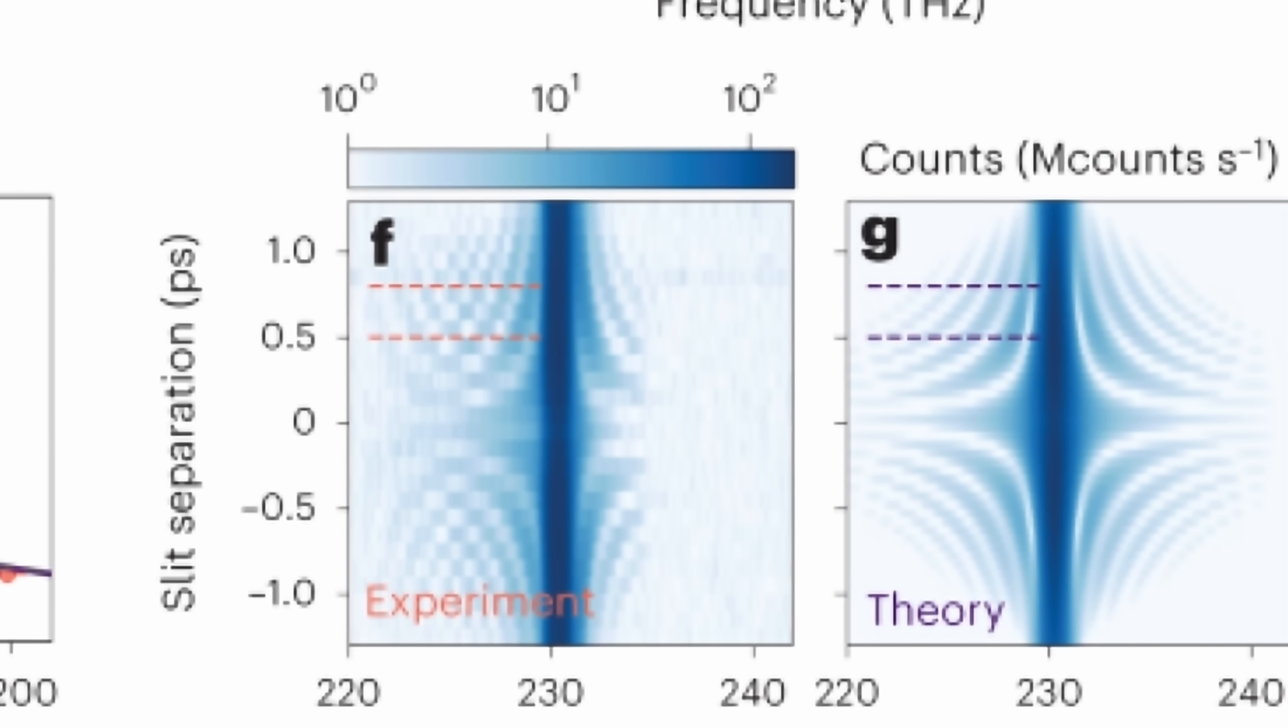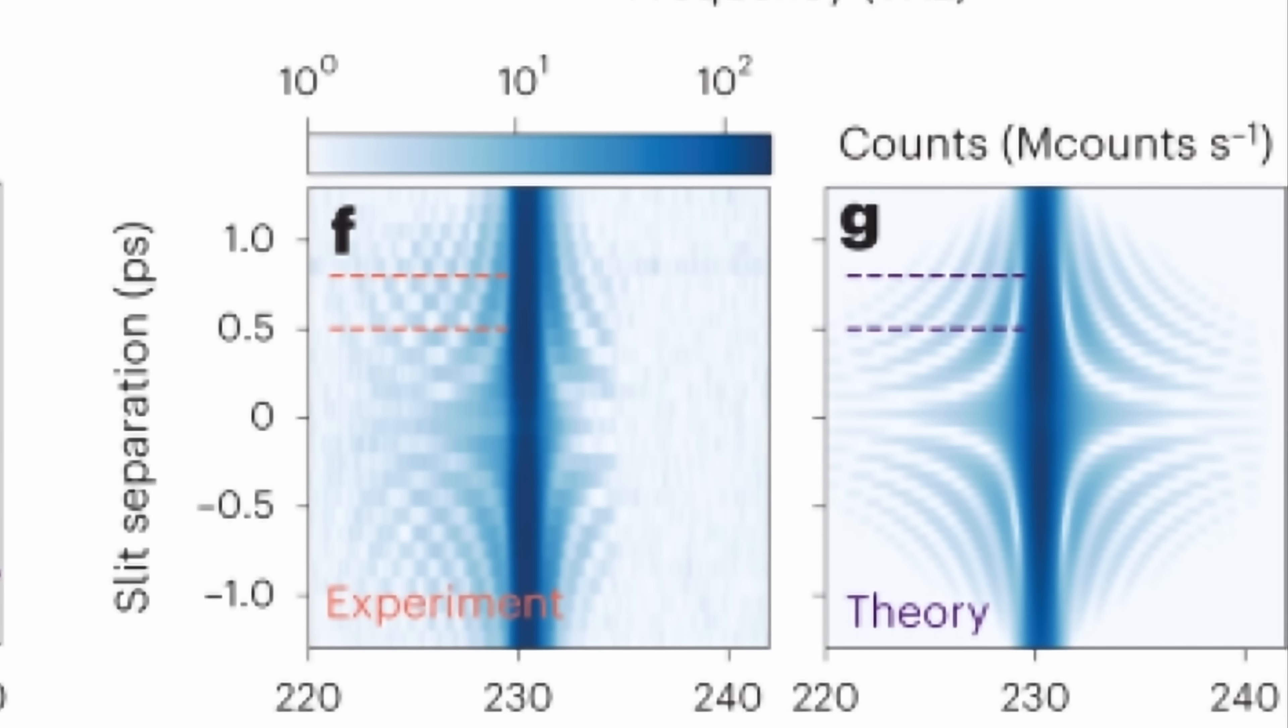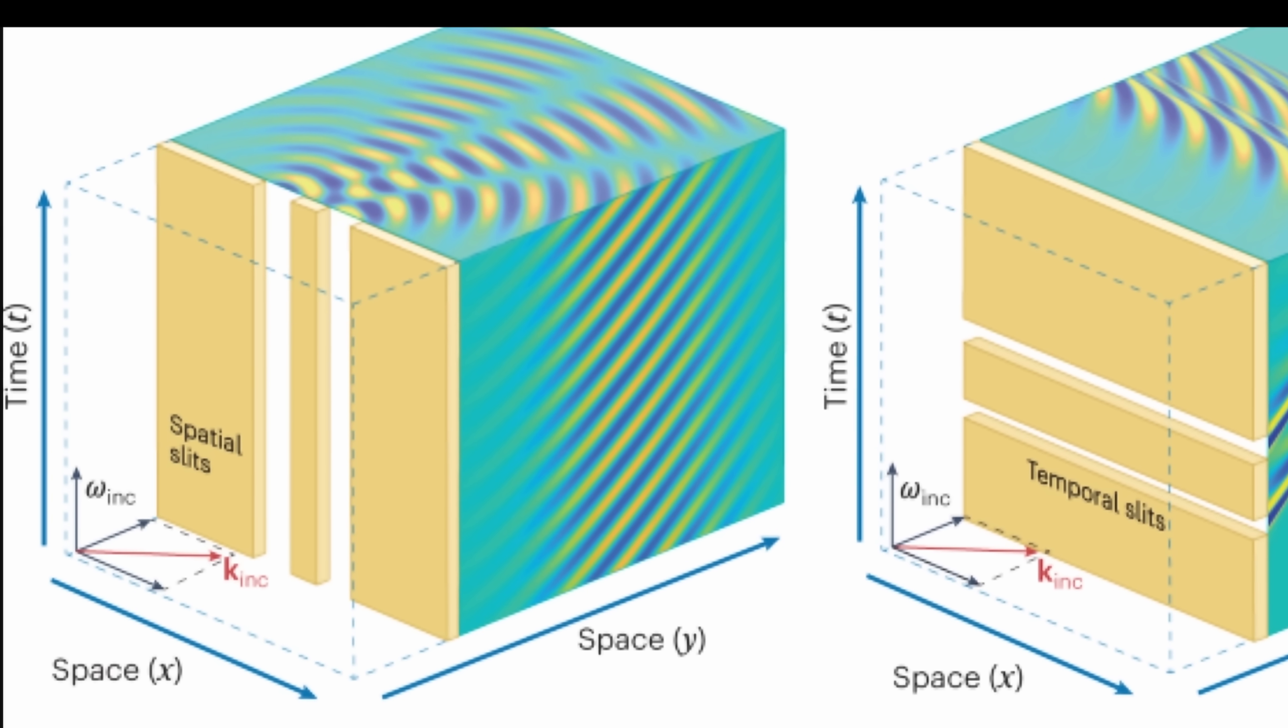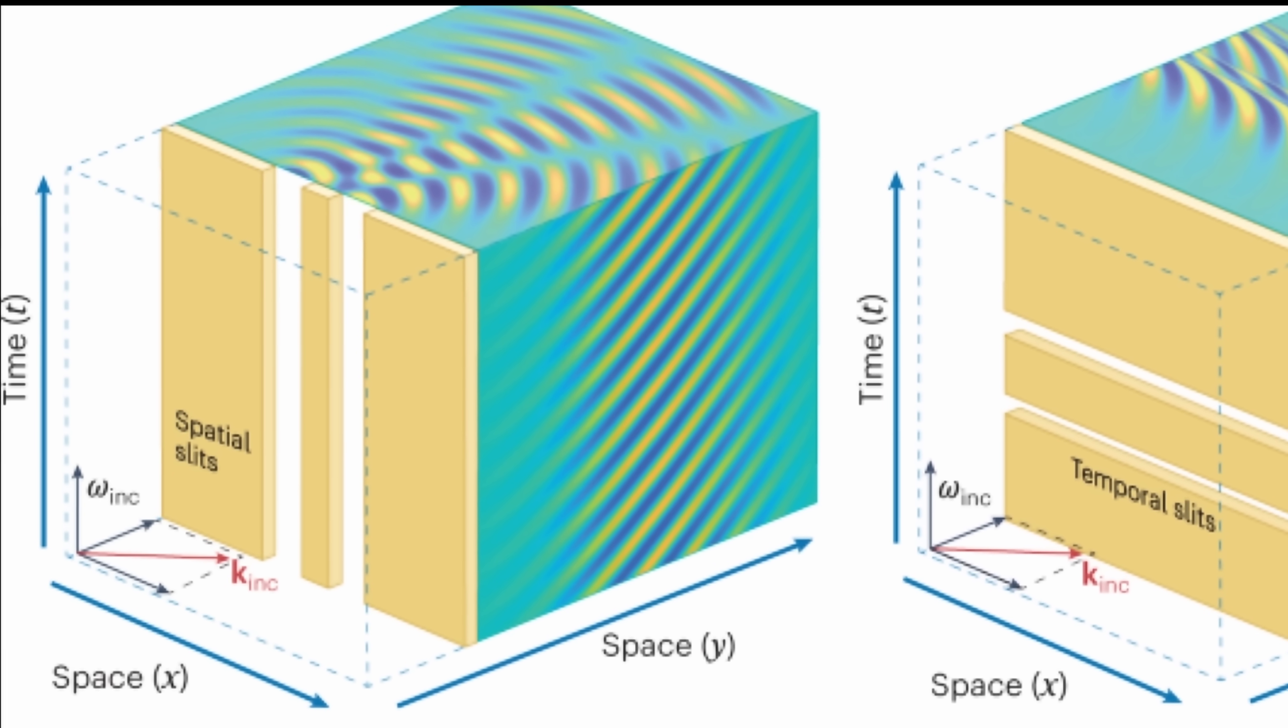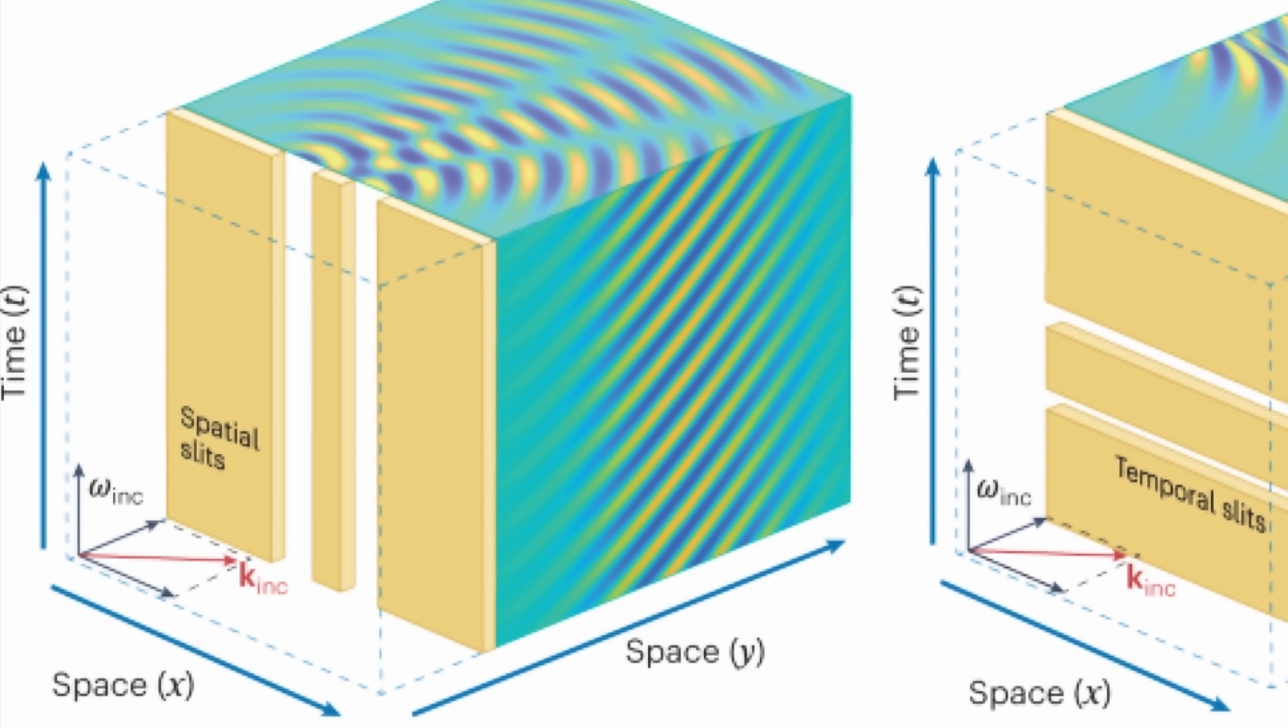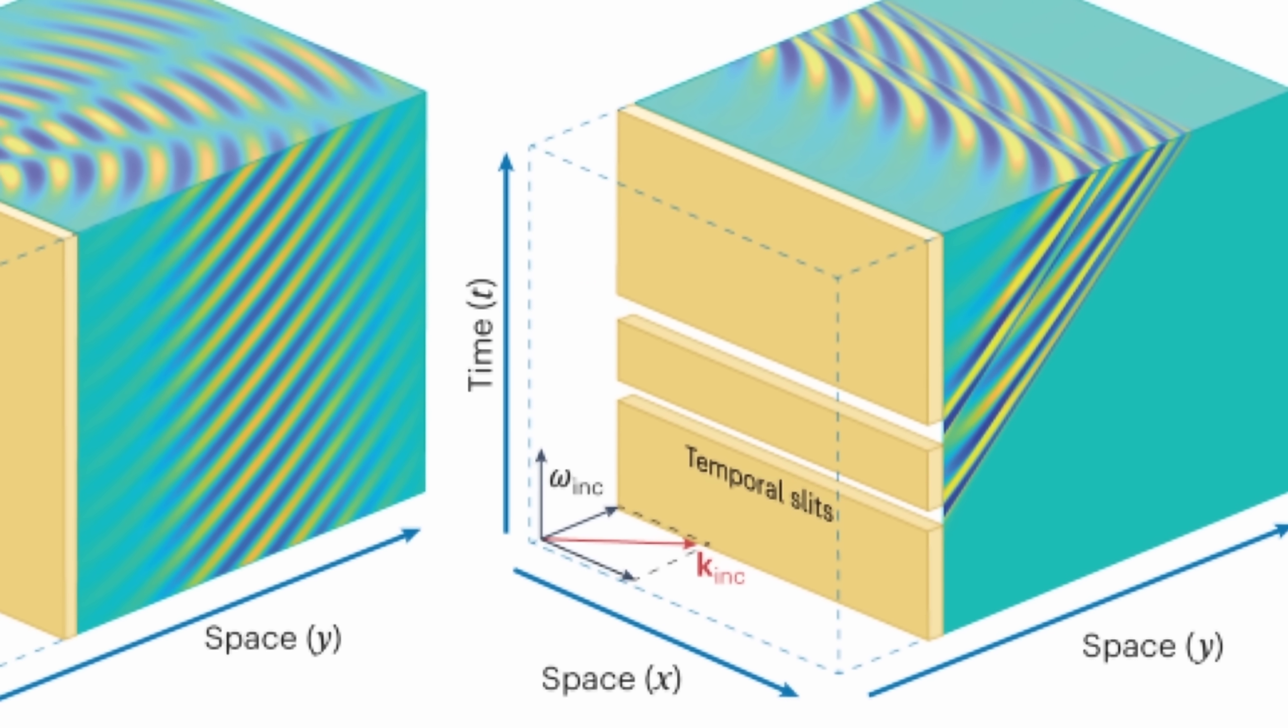But by then using a second pump laser, it started to create these unusual interference patterns as if light was passing through two spatial double slits, but instead of changing the shape, it was changing frequencies. Here's maybe one way of trying to visualize this, where we have the spatial slits producing the interference in space, and the temporal slits producing the interference in time.